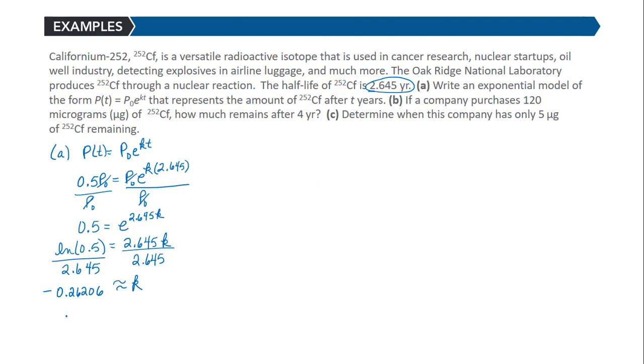So the exponential model is P(t) = P₀e^(-0.26206t). Keep in mind we do want to get a negative value of k because we're talking about a decay model.